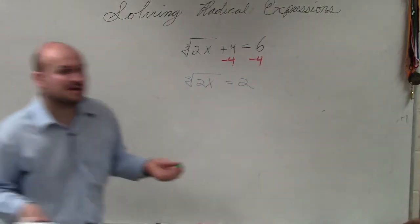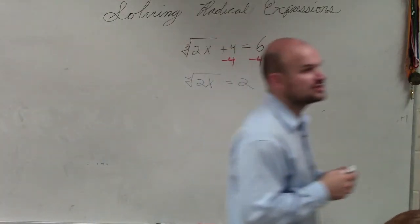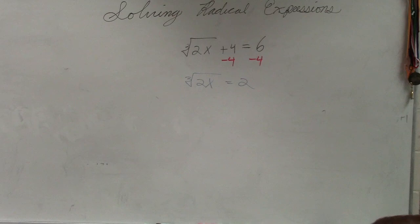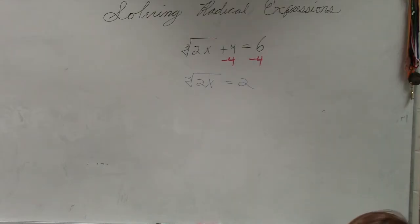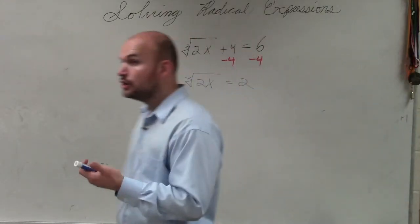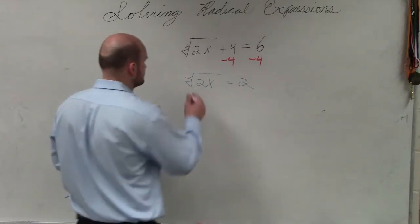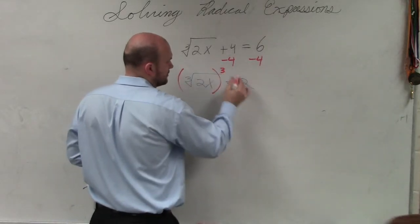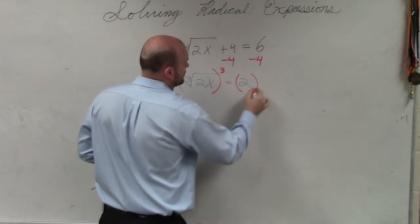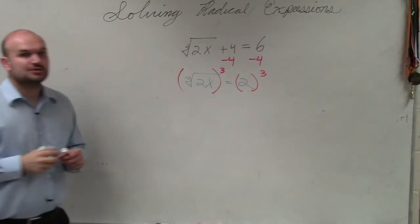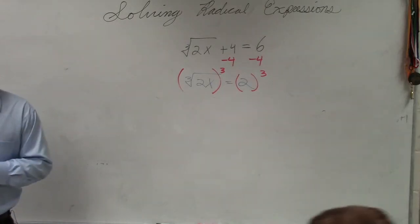Now, just like we undid the square root — the inverse operation of the square root was to square it — the inverse operation of the cube root would be to cube the number. So we're going to cube both sides.